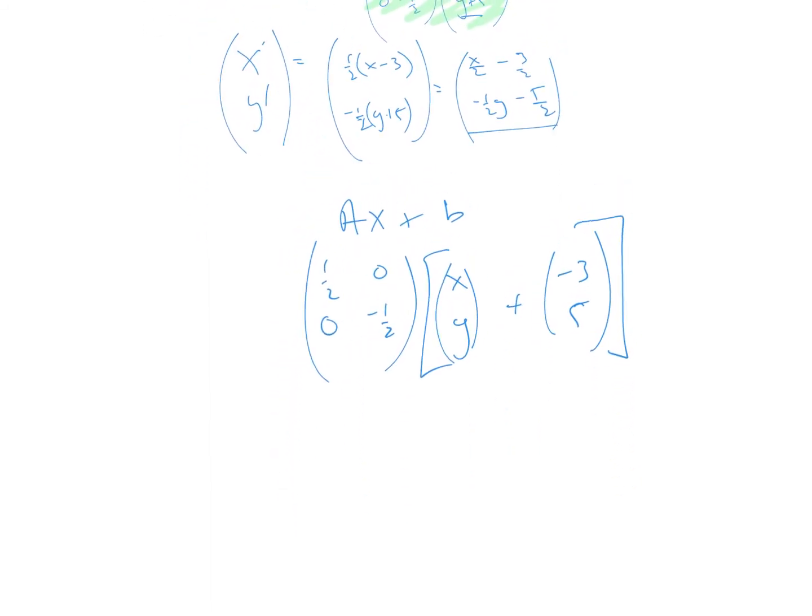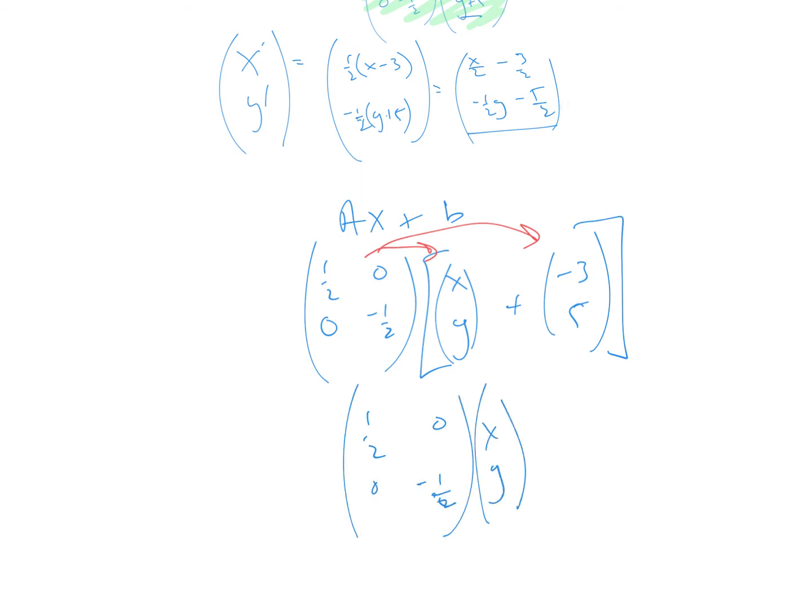And so one of the things that I can do with matrices is I can distribute the A matrix into both. And so when I distribute that, it ends up being half, zero, zero, negative a half times x, y plus half, zero, zero, negative a half times negative three, five.